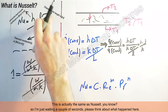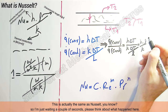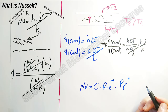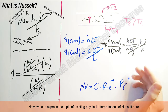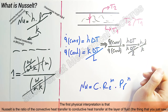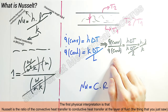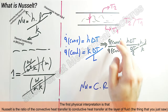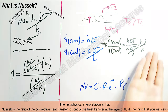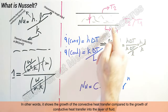So what is this ratio? It's actually the same as the Nusselt number. From this we can express physical interpretations of Nusselt. The first physical interpretation is that Nusselt is the ratio of convective heat transfer to conductive heat transfer at the layer of fluid — in other words, it shows the enhancement of convective heat transfer compared to conductive heat transfer within the fluid layer.